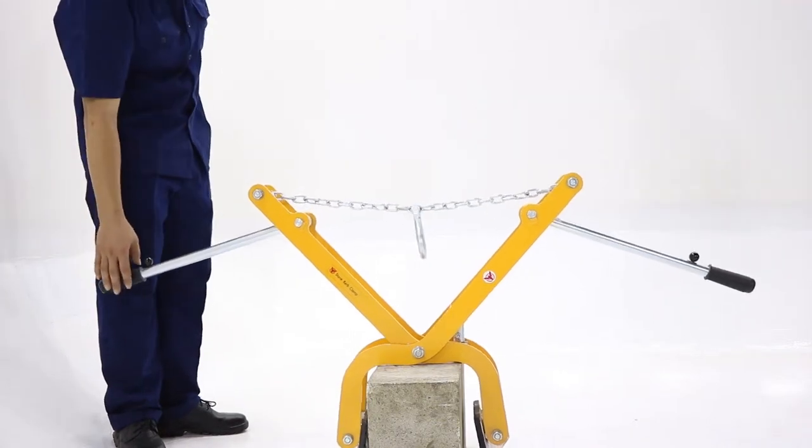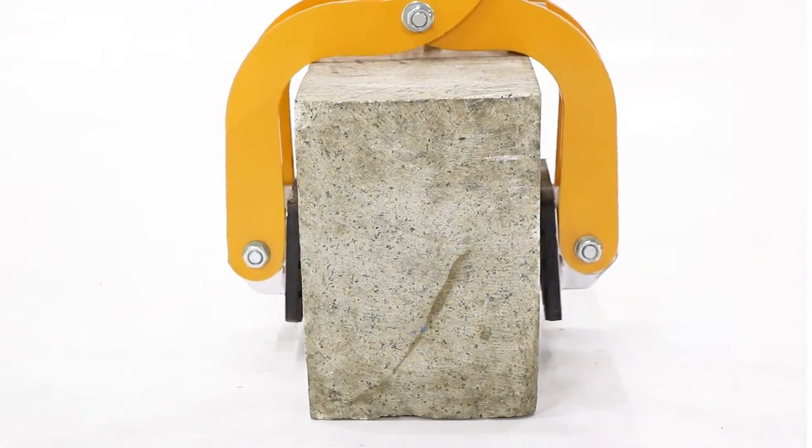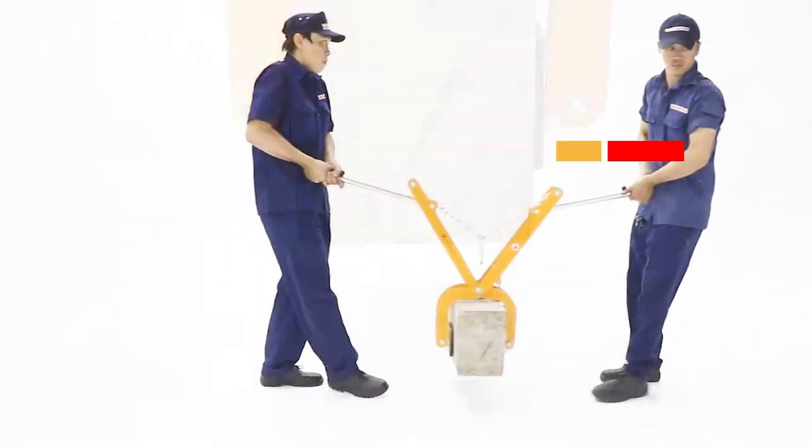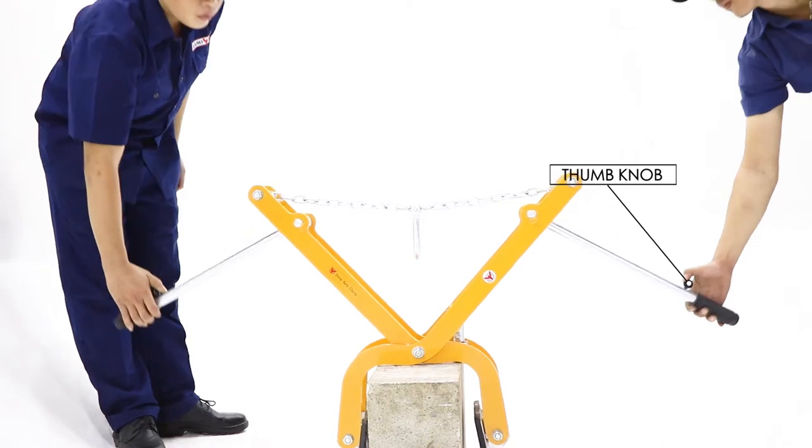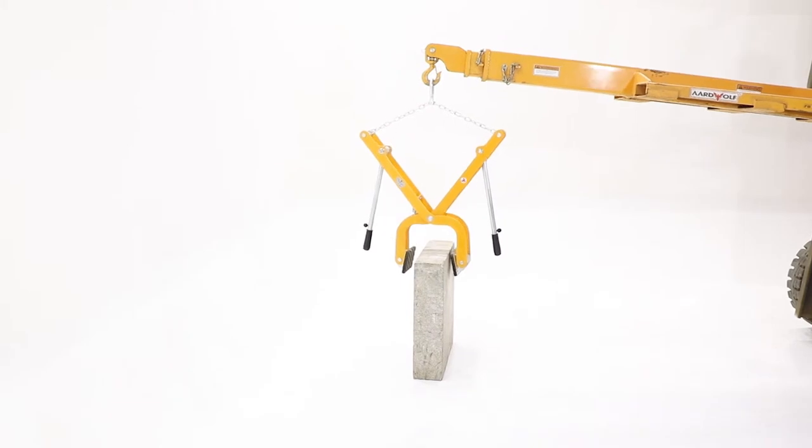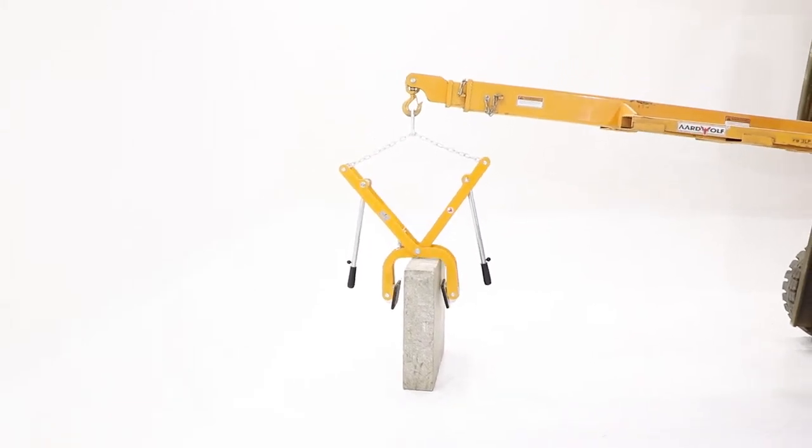This clamp can also be attached to a machine. Before attaching the stone curb clamp to a machine, lower the handles by simply pushing the thumb knob forward once the stone curb clamp is placed on the stone.